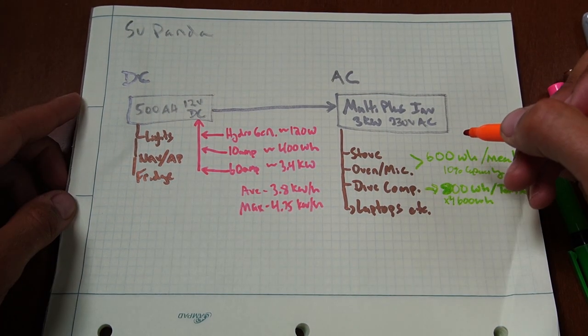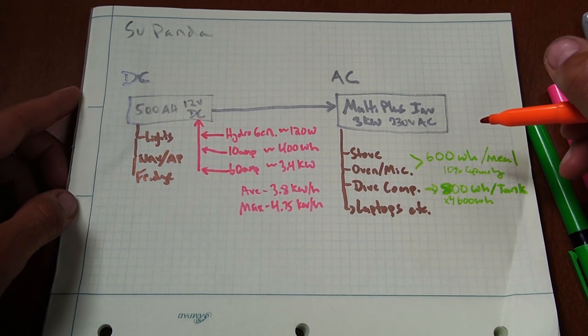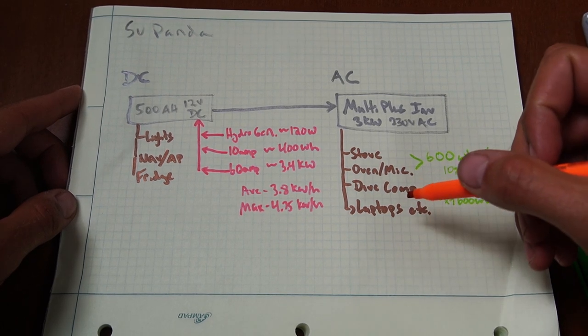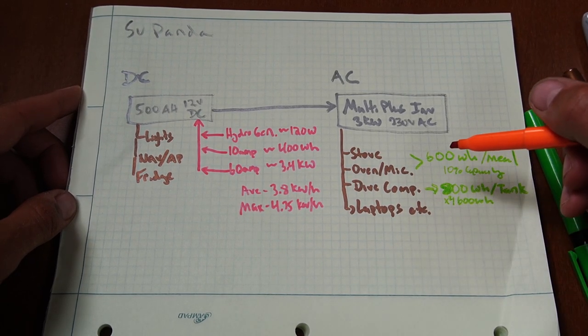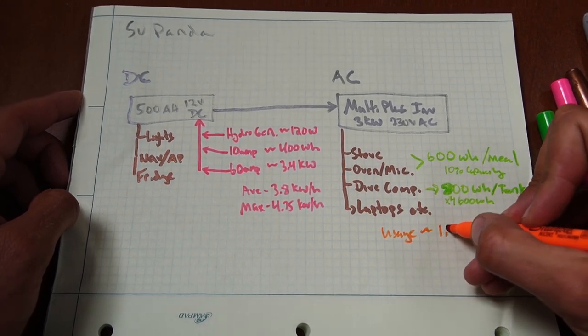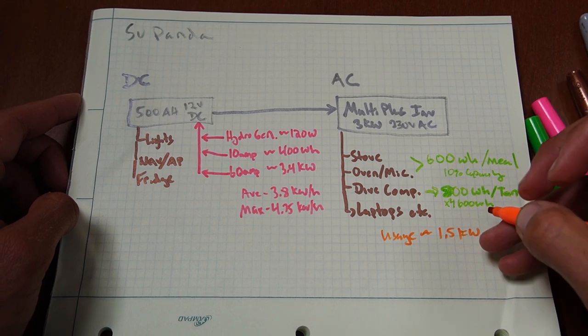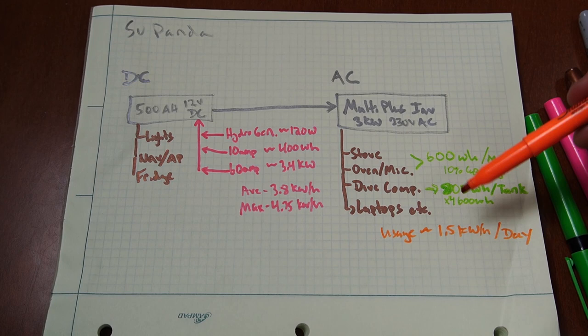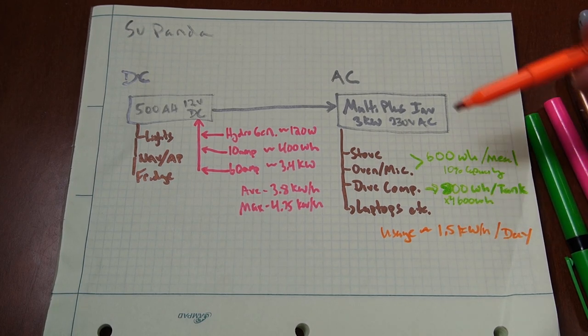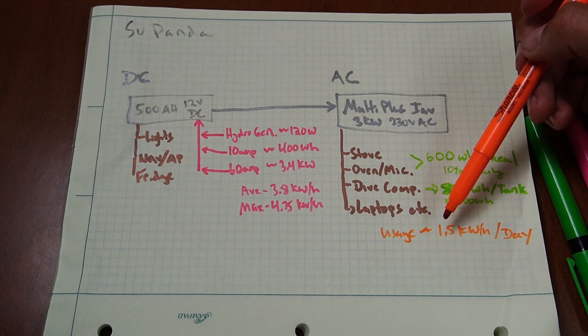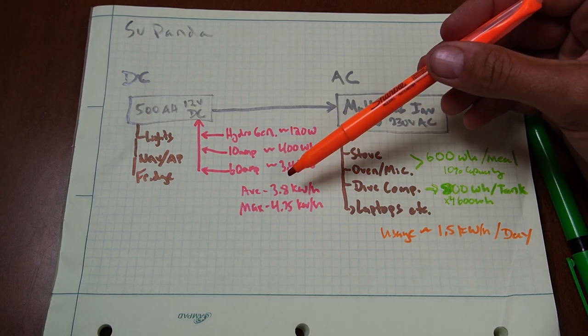Daily usage between for two to like four crew members, cooking meals, sitting at anchor, working on laptops, maybe diving a little bit. Average about 1.5 kilowatt hours per day. As you can see, our usage is far less than even our average solar input. From 1.5 kilowatt hour usage to 3.8.